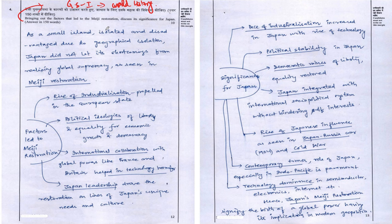The question asked here is: 'Bringing out the factors that led to the Meiji Restoration, discuss its significance for Japan.' This is a 10-marker question to be answered in 150 words, and we know how to do space management from the discussions we have every day in our Topper series.